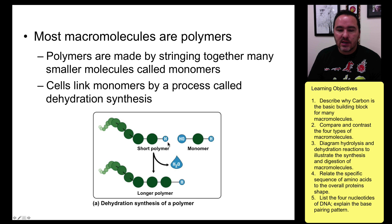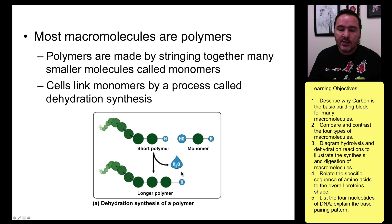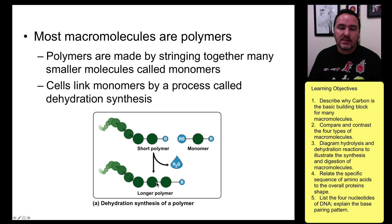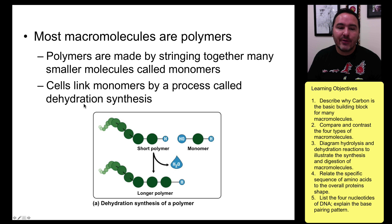In dehydration synthesis, on one of the shorter polymers we take a hydrogen, and from the monomer we take the OH. An O and two H's is water, so what we're doing is getting water out and building something larger. Dehydration means to take water out; synthesis means to make larger.